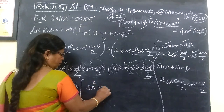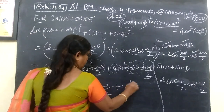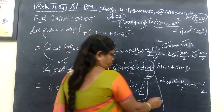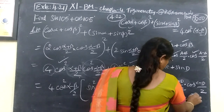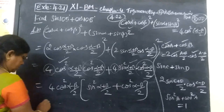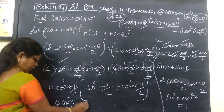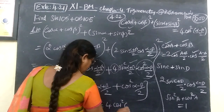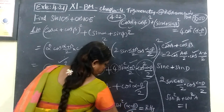Here is sin square alpha plus beta by 2, here is 1 — now which is the 2K — plus cos square alpha minus beta by 2. And we know the formula: sin squared a plus cos squared a equals 1. So using this, 4 into cos square alpha minus beta by 2 into 1. So 4 cos square alpha minus beta by 2 equals RHS.